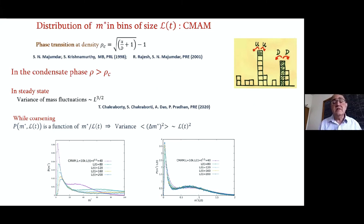Before we come to that, let me just say that the same pattern repeats in the conserved mass aggregation model. There's a phase transition in steady state, which is well known. In the condensed phase, what we find is that in steady state, the variance of mass fluctuations is known through earlier work to grow like the system size to the three halves. This means the standard deviation grows like L to the three quarters, which is smaller than L. It's well contained.